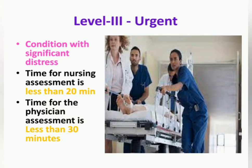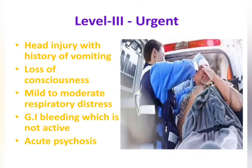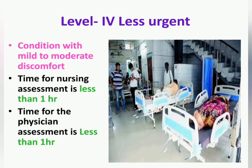Level three is the Urgent category. Nursing assessment should be within 20 minutes and physician assessment within 30 minutes. Clients with head injury with history of vomiting or loss of consciousness, mild to moderate respiratory distress, active GI bleeding, and acute psychosis all fall under level three triage, coded yellow.